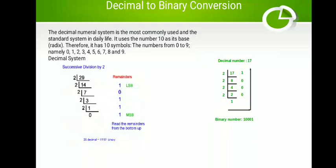After each division, the remainder is noted. The first remainder obtained is the LSB and the last remainder is the MSB. The division is continued until the quotient is equal to 0. This is called the successive division method, repeated division method, or double-double method.